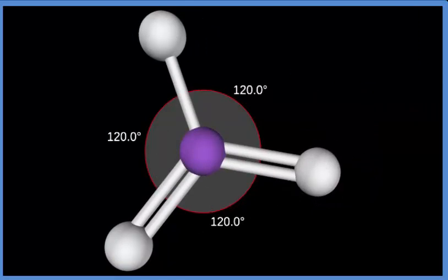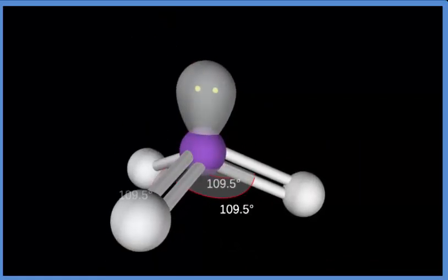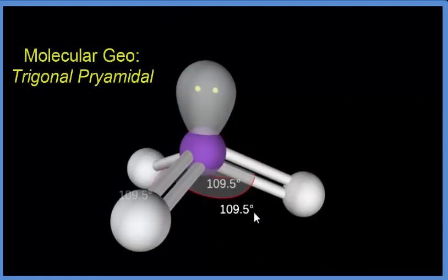It's all in a plane. When we add that lone pair, that pushes everything down. We end up with a trigonal pyramidal molecular geometry for this BrO3- ion.